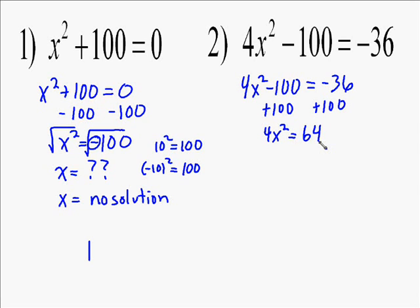Now we need to get the x squared by itself. So we divide both sides by 64. I mean by 4. So 64 divided by 4 equals 16. So we end up with x squared equals 16.